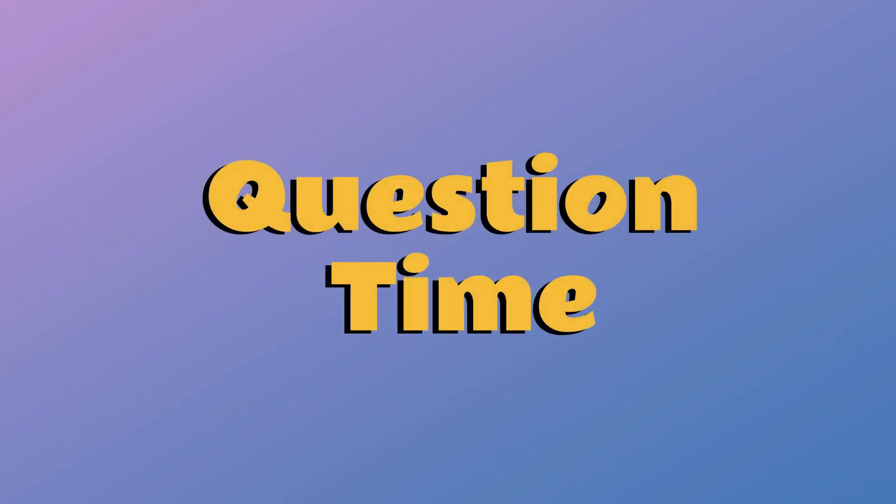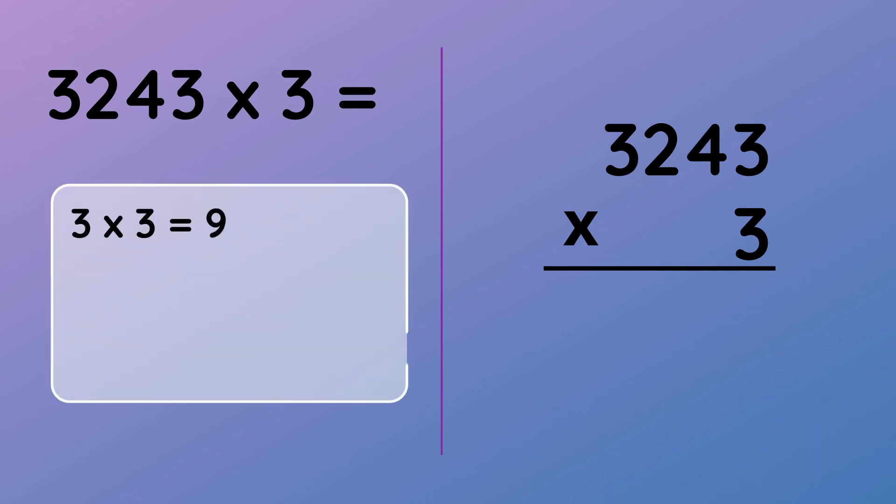Let's do a practice question for you to get the hang of it. 3243 multiplied by 3. We first do 3 multiplied by 3 which gives us 9. We put 9 in our answer space underneath the ones column.